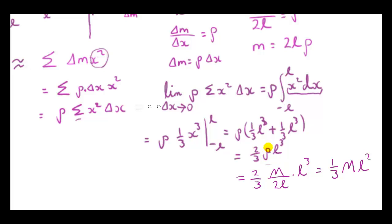Normally we don't want the moment of inertia expressed in terms of the density ρ, so we replace ρ with the mass of the rod divided by its length 2L. The moment of inertia about an axis through the midpoint and perpendicular to the rod is therefore (1/3)ML², where L is half the length of the rod.